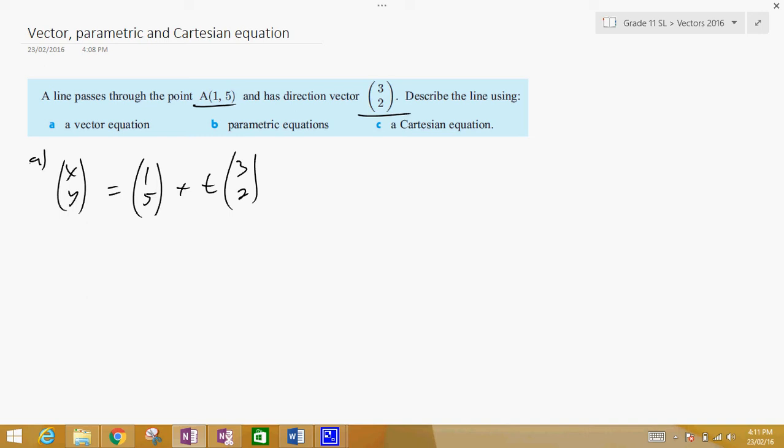Now we're going to change it into a parametric equation, and what that means is just separating the x's and the y's. So for B, the parametric equation is x equals 1 plus 3t and y equals 5 plus 2t.